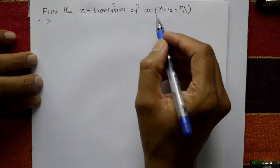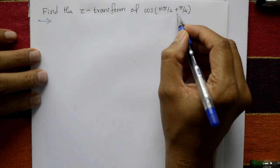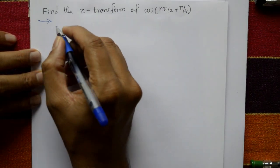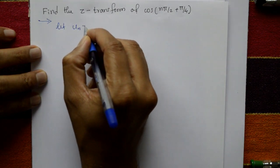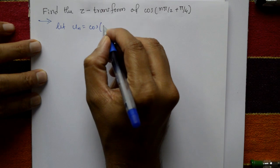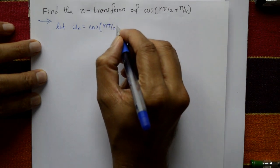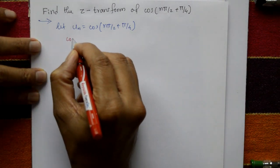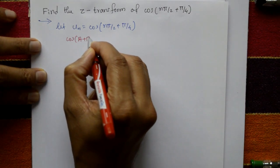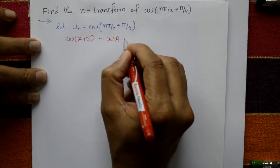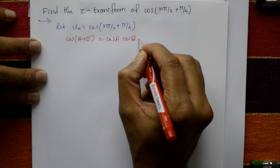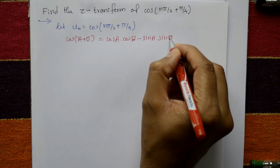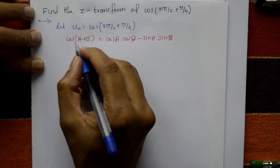Find the Z-transform of u(n) = cos(nπ/2 + π/4). We know the standard formula: cos(A + B) = cos A · cos B − sin A · sin B.